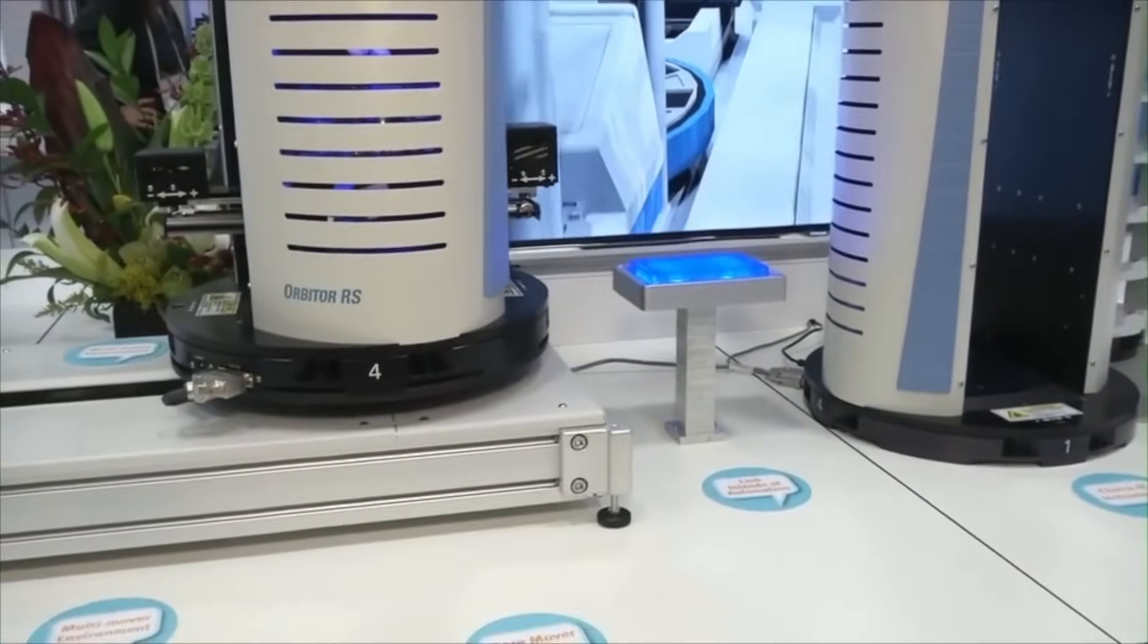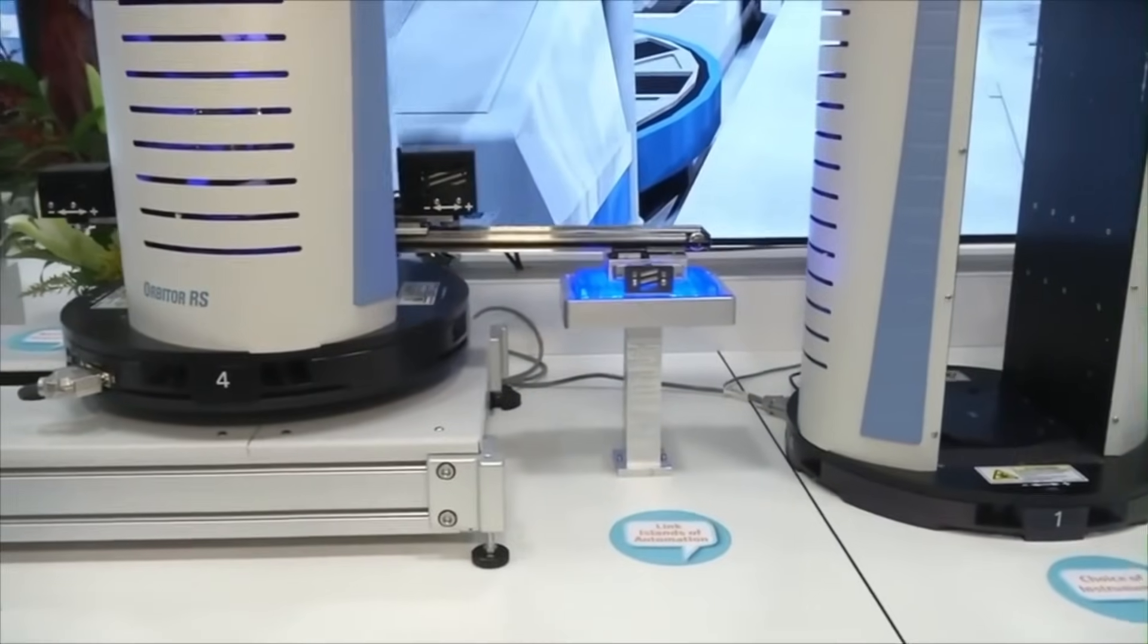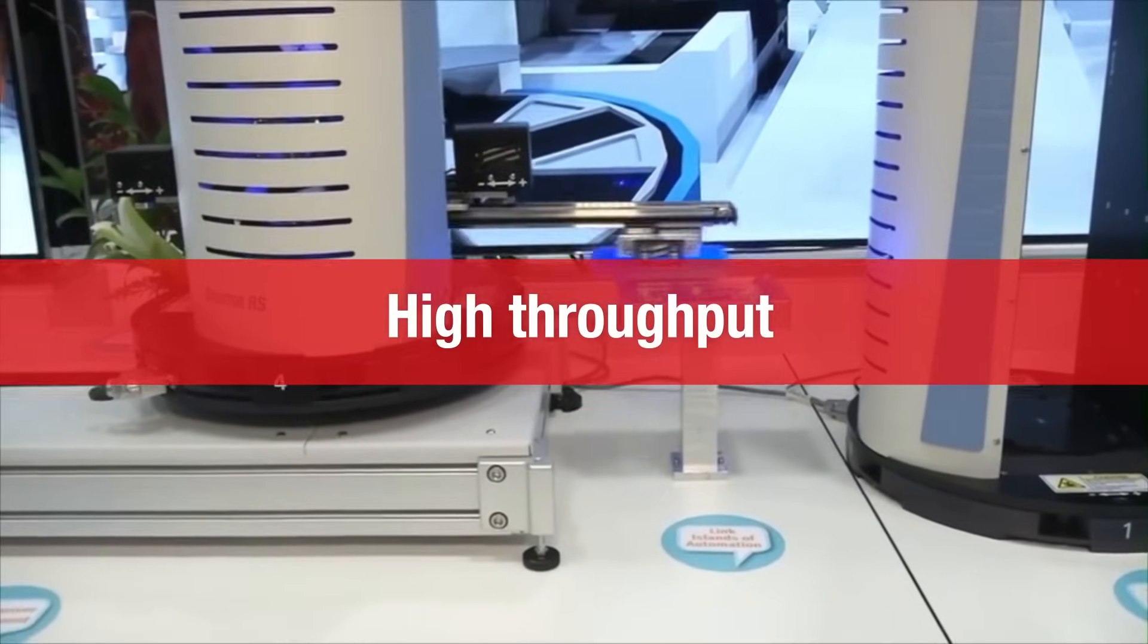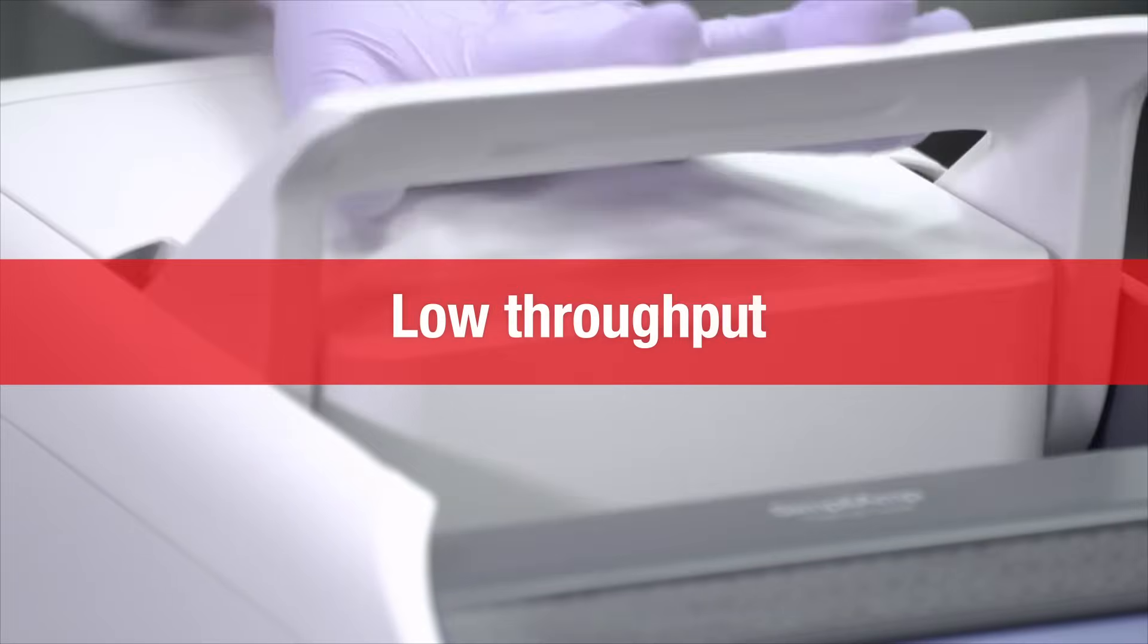Do you need to seamlessly pivot between 96-well robotic system-compatible plates in high-throughput applications and an 8-tube strip in a low-throughput experiment?